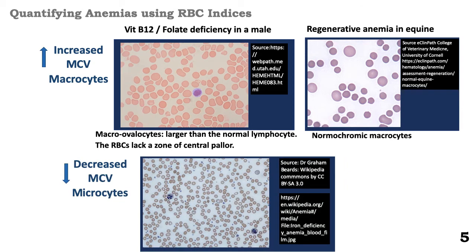In this smear, we are looking at a decreased MCV, or decreased mean corpuscular volume. When this happens, we have got microcytes.